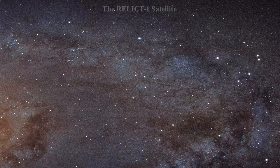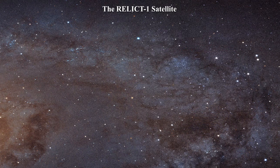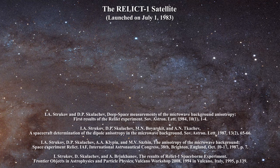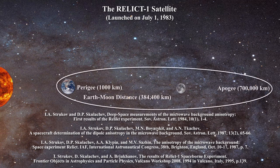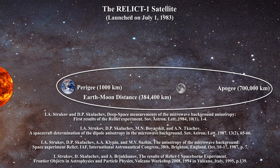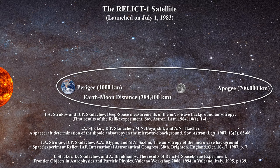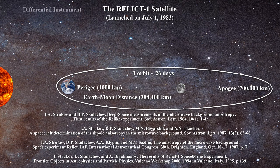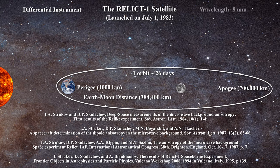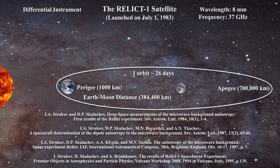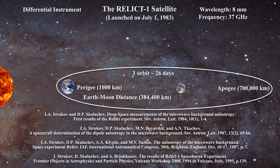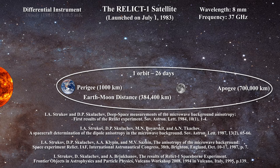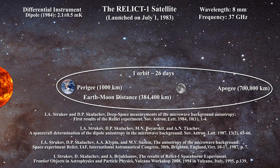With regards to directly measuring the dipole, I wanted to mention the results of a Soviet satellite, namely Relit-1. Relit-1 was launched in 1983 and conducted the first satellite-based analysis of the microwave background. The Soviets placed Relit-1 in a high altitude orbit with a perigee of 1,000 kilometers and an apogee of 700,000 kilometers — equivalent to about half the distance from the Earth to L2. Relit-1 completed one orbit around the Earth about every 26 days, operated at a single wavelength of 8 millimeters corresponding to 37 GHz, and was calibrated by an onboard signal generator and also used thermal emission from the Moon. Its first report of the dipole gave a value of 2.1 ± 0.5 mK, as published in a 1984 paper.